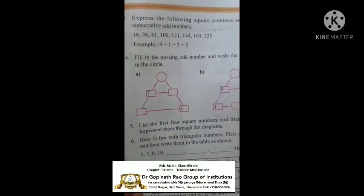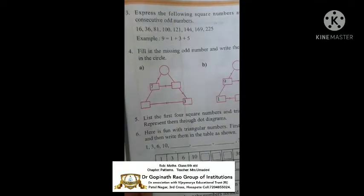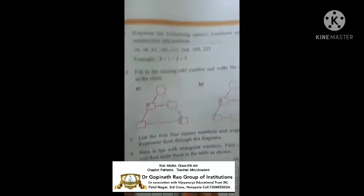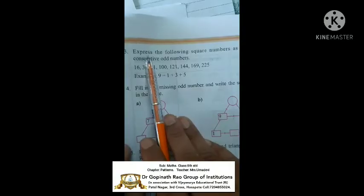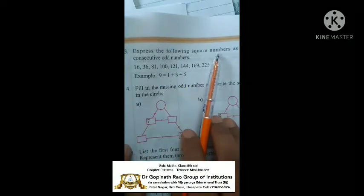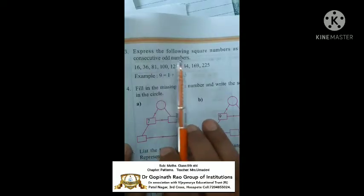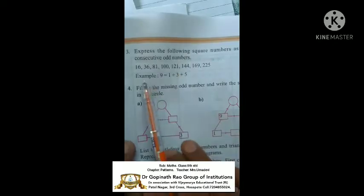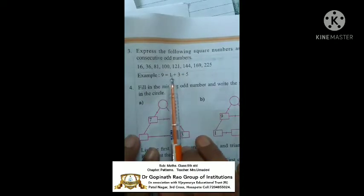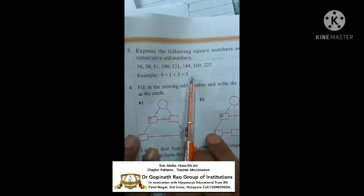Good morning children. Today's topic is Patterns, Exercise 10.1, going to the third question. What is the third question here? Express the following square numbers as the sum of consecutive odd numbers, using only odd numbers. Here is one example: 9 equals 1 plus 3 plus 5. You are using only odd numbers.